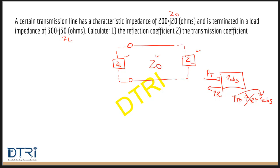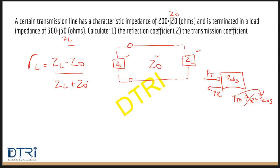ZL and Z0 are not the same values, which means there is already a mismatch. We have to find how much of the power is reflected from the load because of this mismatch and how much gets reflected back towards the source. Using the formula: gamma L equals ZL minus Z0 divided by ZL plus Z0.